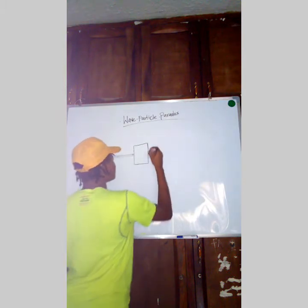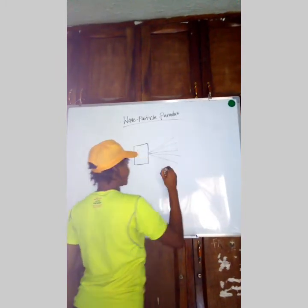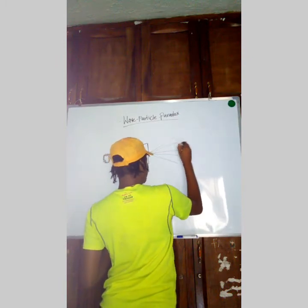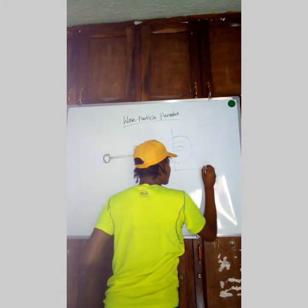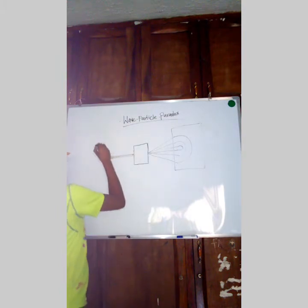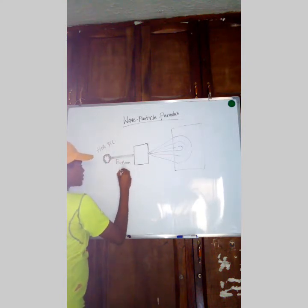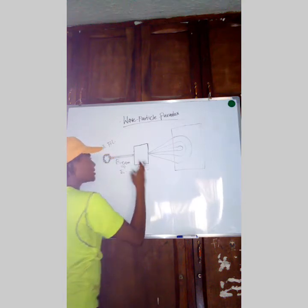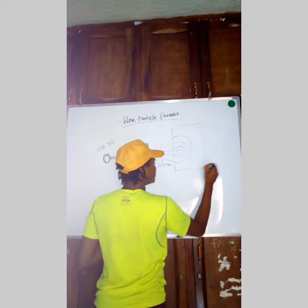These electrons then diffracted — remember that diffraction has to do with the spreading of light. The diffraction rings are now produced on a photographic plate. So we have: the hot filament, the beam of electrons, the flat metal surface, the diffraction of the electrons, and the electron rings formed on the photographic plate.